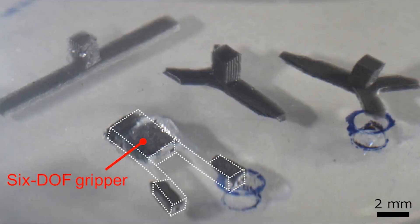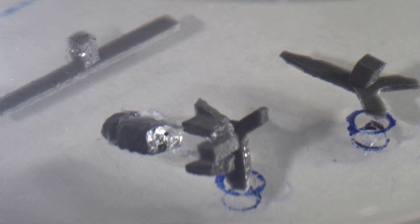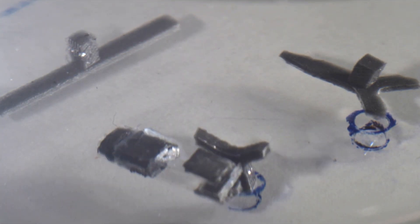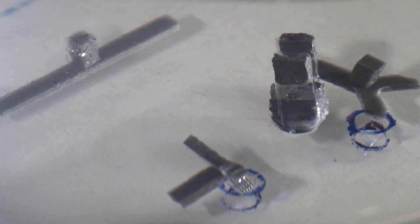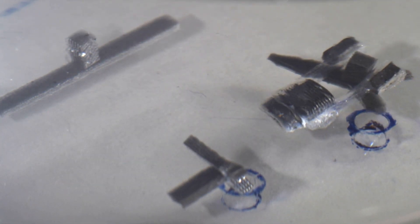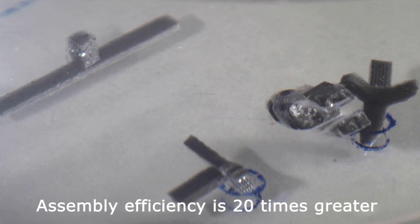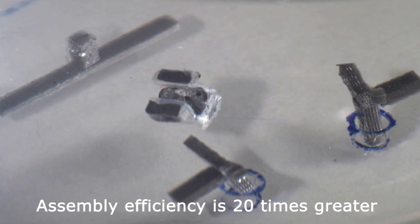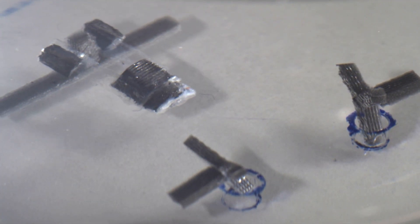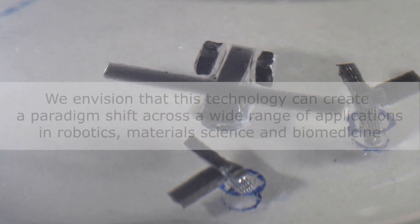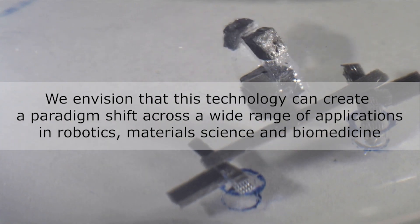Another soft-bodied functionality that we can achieve is active gripping. Our six degree of freedom soft robotic gripper is able to complete a complex assembly operation with high dexterity in just under five minutes, 20 times faster than existing robots. We envision that this technology can create a paradigm shift across a wide range of applications in robotics, material science, and biomedicine.